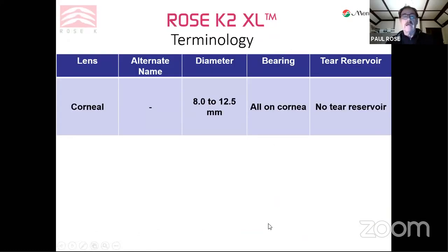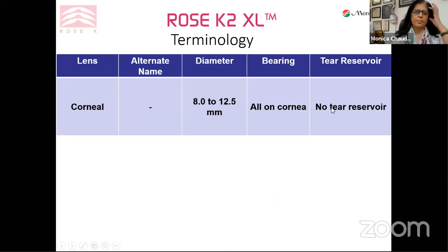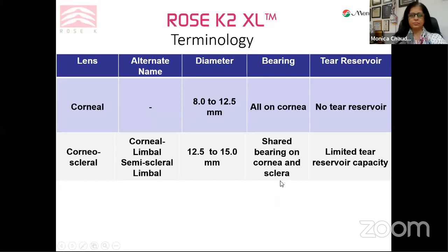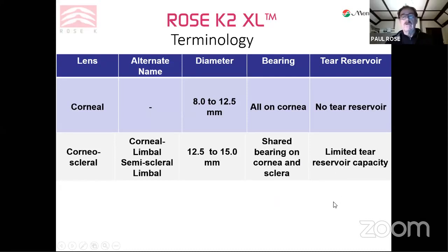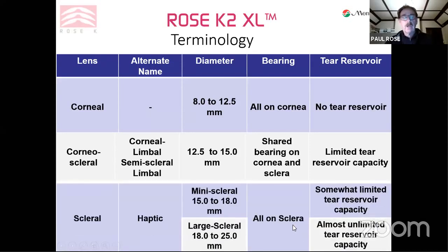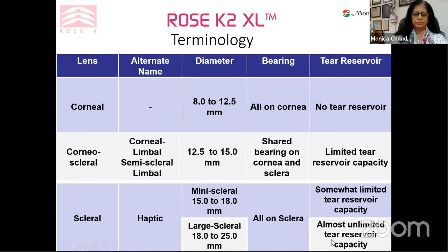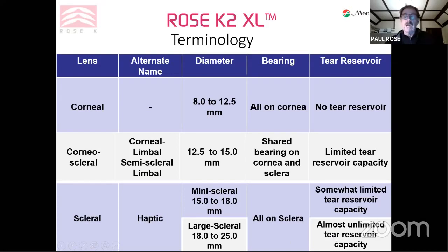Just so we're on the same page: a corneal lens has all its bearing on the cornea and you have no tear reserve. For a corneal scleral lens, you have bearing on both the cornea and sclera — most of the bearing is on the cornea with little bearing on the sclera, and you have limited tear reserve because you do get some tear exchange. With scleral lenses, divided into mini and large sclerals by diameter, all the bearing is on the sclera; you don't touch the cornea, and with large lenses you have almost unlimited tear reserve — the tears are basically trapped behind the lens with very little tear exchange.